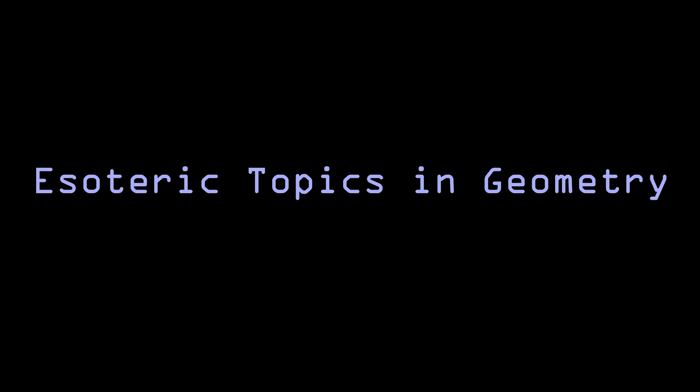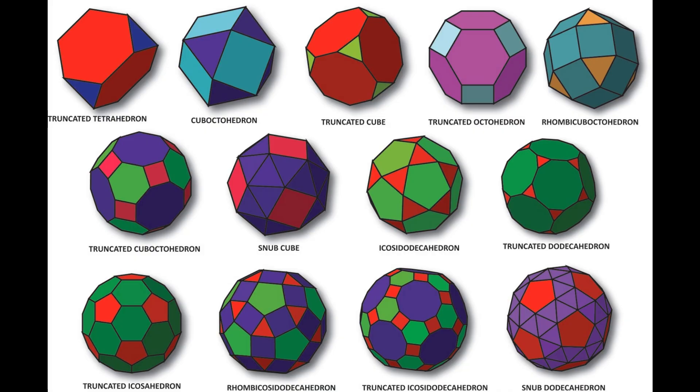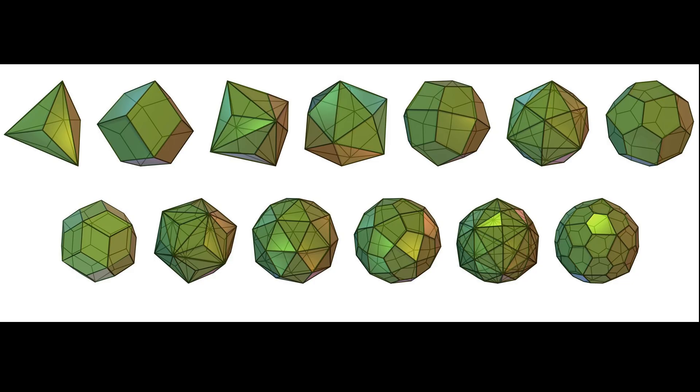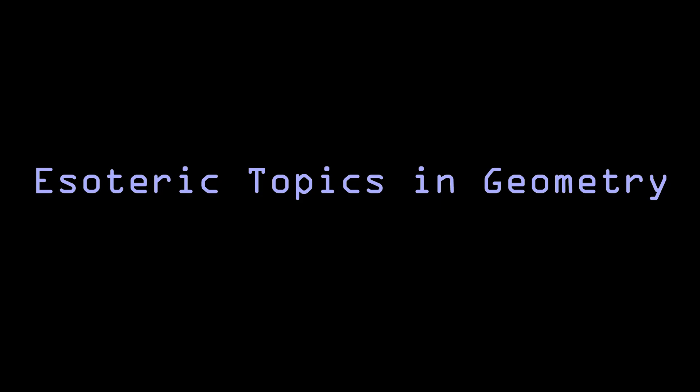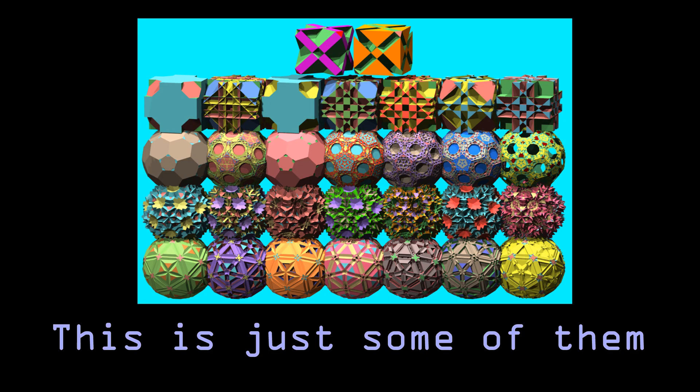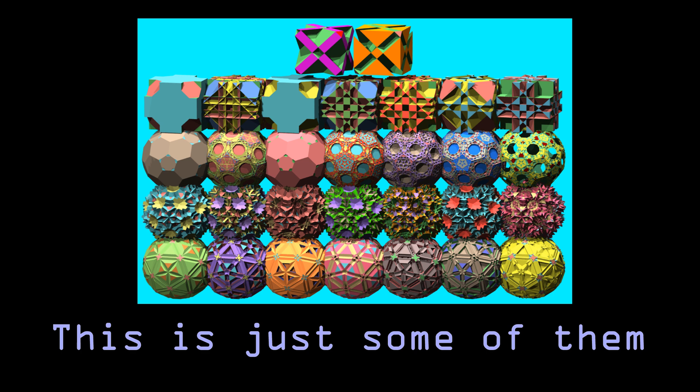Next are the convex uniform polychora and their duals, the four-dimensional equivalent of the Archimedean solids and Catalan solids. There are 40 of each, and the set is proven complete. We're not going to touch the non-convex ones because there are 2,135 of them known, and the set isn't even proven complete yet, so there are probably more.